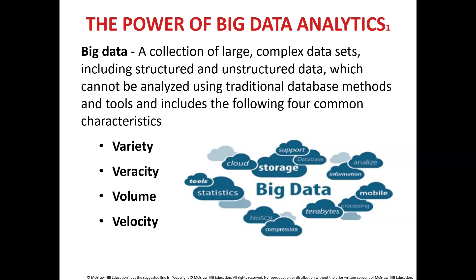Variety includes data from spreadsheets and databases as well as from email, videos, photos and PDFs — all of which must be analyzed. The next characteristic is veracity: the uncertainty of data including biases, noise and abnormalities — essentially the untrustworthiness of data. Data must be meaningful to the problem being analyzed, and organizations must keep data clean and implement processes to keep data from accumulating unnecessarily in systems.